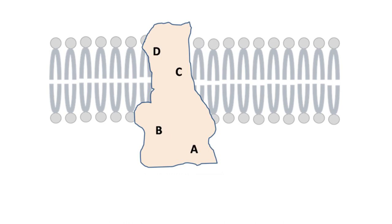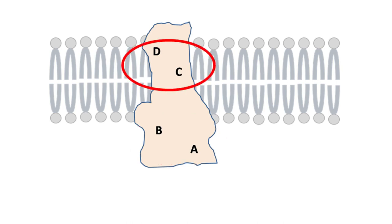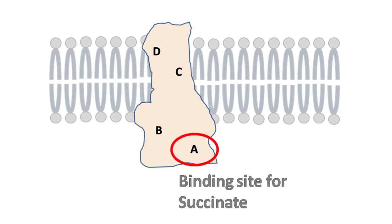This complex has four subunits. Two subunits, A and B, are located in the matrix of the mitochondria, while the other two subunits, C and D, are transmembrane domains. Subunit A is the binding site for the substrate succinate.